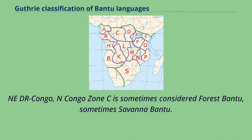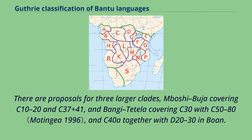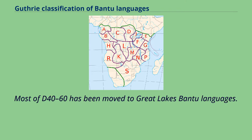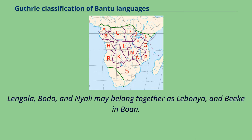Zone C covers northern D.R. Congo and Congo, and is sometimes considered Forest Bantu, sometimes Savannah Bantu. There are proposals for three larger clades: Moshibuja covering C10–C20 and C30.7 plus C41, and Bangi-Tatala covering C30 with C50–C80, and C40A together with D20–D30 and Bone. Zone D covers Congo: D10, D30, and some of D20 and D40 are sometimes considered Forest Bantu, the others Savannah Bantu. Most of D40–D60 has been moved to Great Lakes Bantu languages. Langola, Bodo, and Nyali may belong together as Labonia.